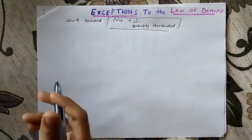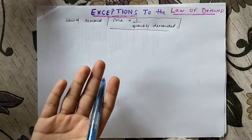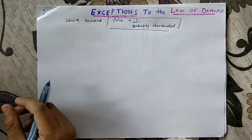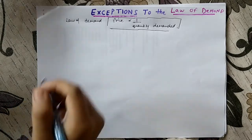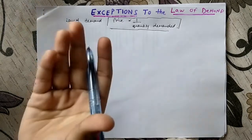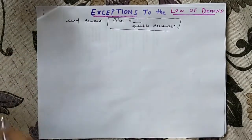Now, what is exception to the law of demand? Obviously, the opposite of this is known as exception to the law of demand. For example, with the fall in price the demand falls, and with the rise in price the demand rises. So this is what we call the exception of demand.